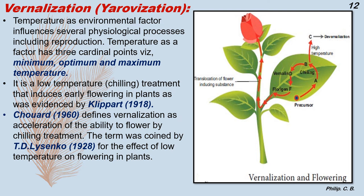Coming to vernalization: temperature as an environmental factor influences several physiological processes, including reproduction. Temperature has three cardinal points: minimum, optimum, and maximum. Low temperature or chilling treatment induces early flowering in plants, as was evident from Klippart's work in 1918. Very low temperature can induce flowering even when it might not otherwise occur.